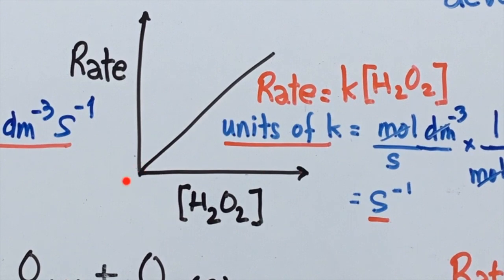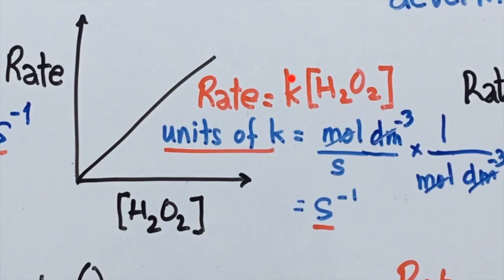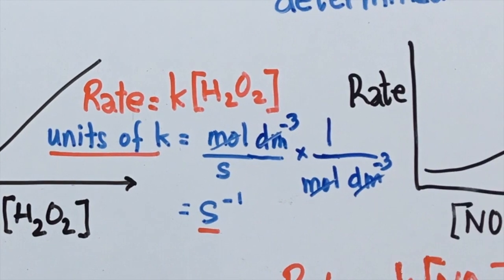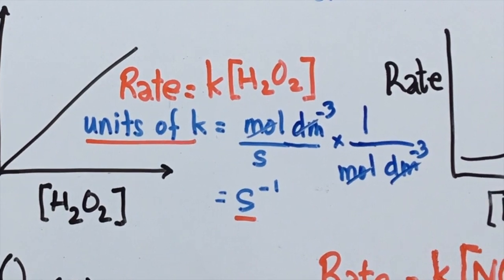Peroxide increased — a direct relationship with the rate. It means that the rate constant K multiplied by the concentration is equal to the rate. The units of K can be derived using the units of rate, mol dm⁻³ s⁻¹, divided by the units of concentration, mol dm⁻³. So dividing rate by the units of concentration means that mol dm⁻³ would cancel, and we simply end up with per second (s⁻¹) as the unit of K for a first order reaction.